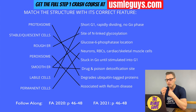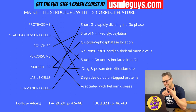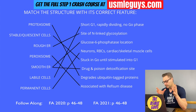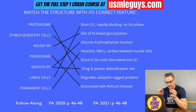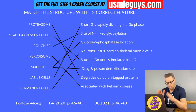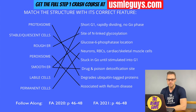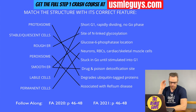Peroxisomes are membrane-enclosed organelles involved in beta-oxidation of very long-chain fatty acids, alpha-oxidation of branched-chain fatty acids (BCFAs) — both only done by peroxisomes — as well as catabolism of amino acids and ethanol, and synthesis of bile acids, cholesterol, and plasmalogens. Important disorders associated with peroxisomes include adrenoleukodystrophy, Zellweger syndrome, and Refsum disease.